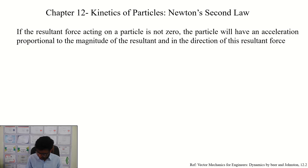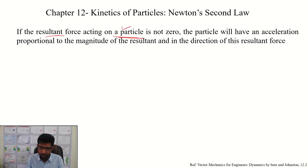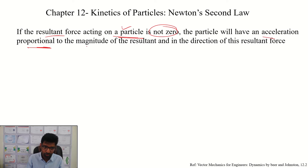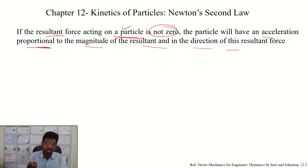We are talking about the resultant force. If the resultant force acting on a particle is not zero, the particle will have an acceleration proportional to the magnitude of the resultant and in the direction of the resultant force. So basically, the resultant force is not zero.